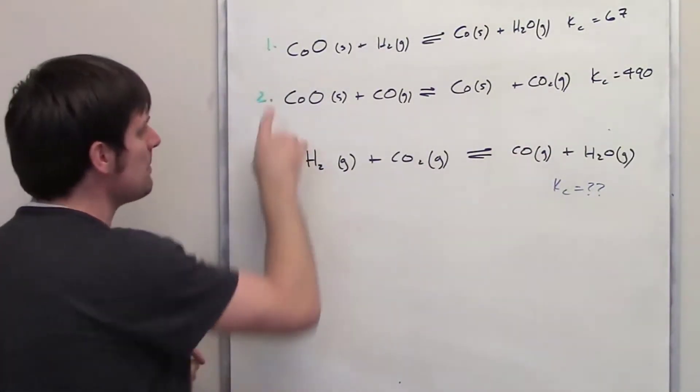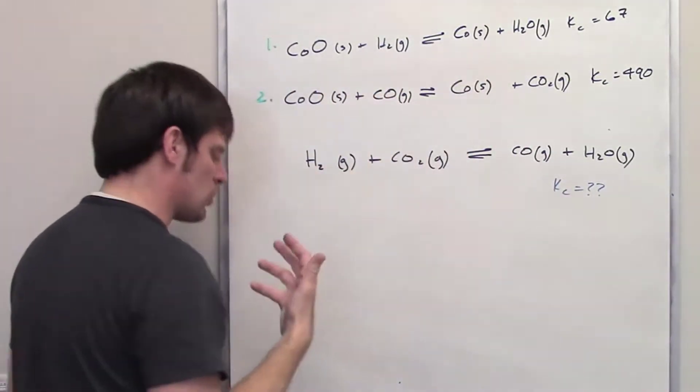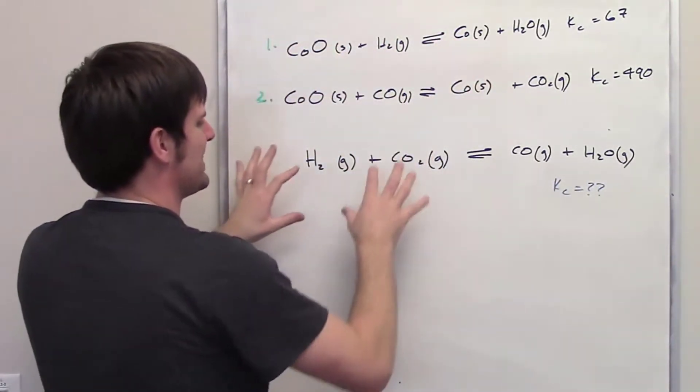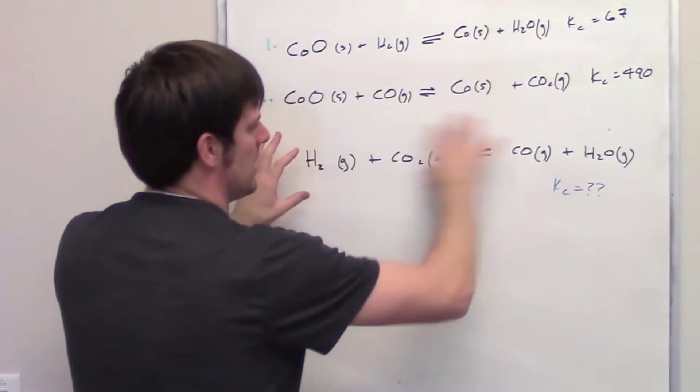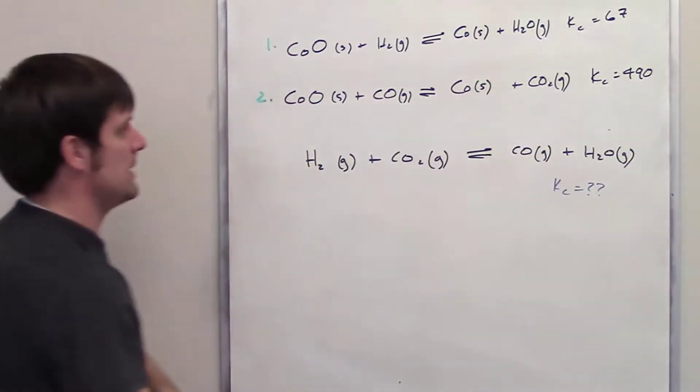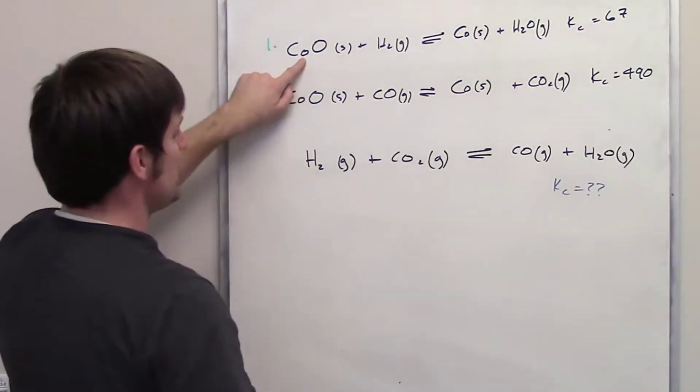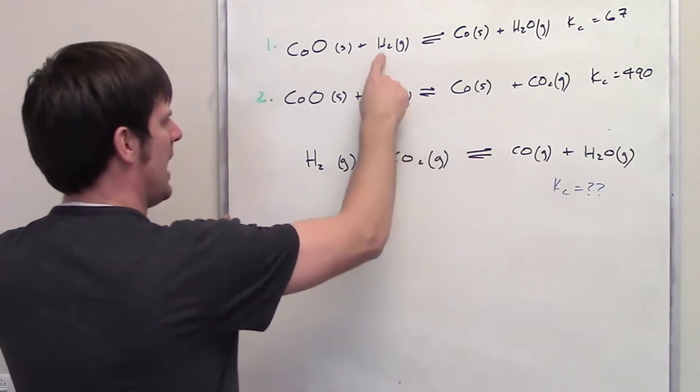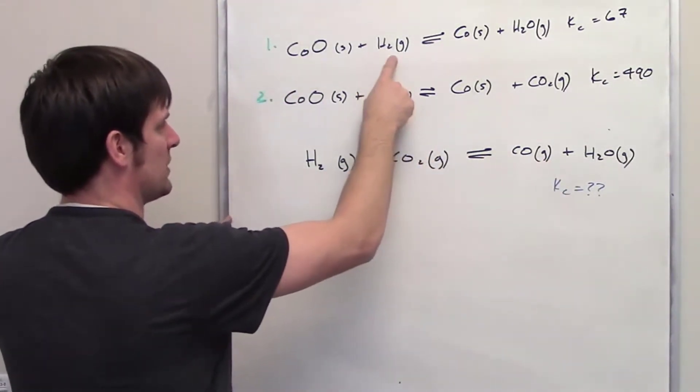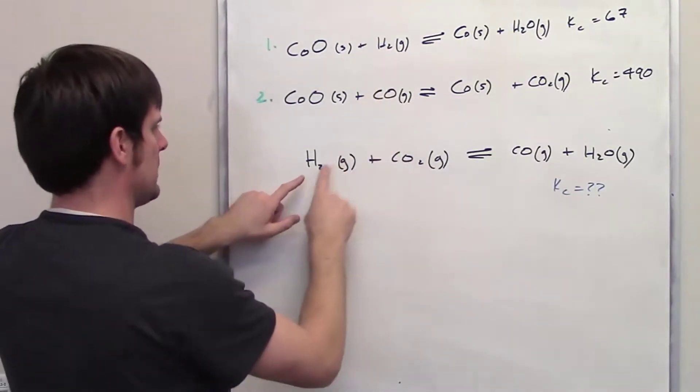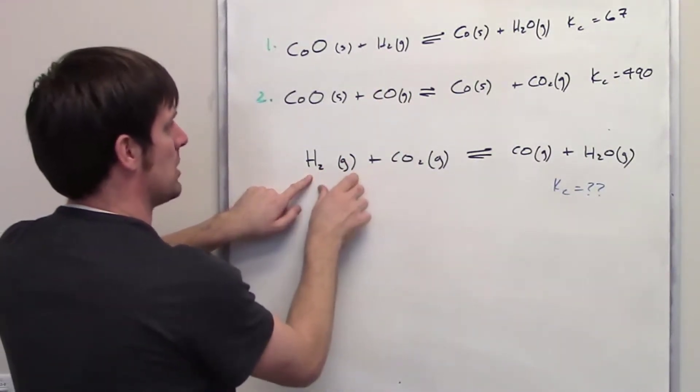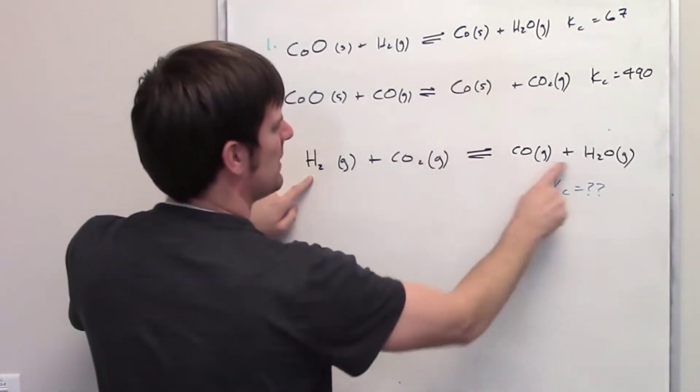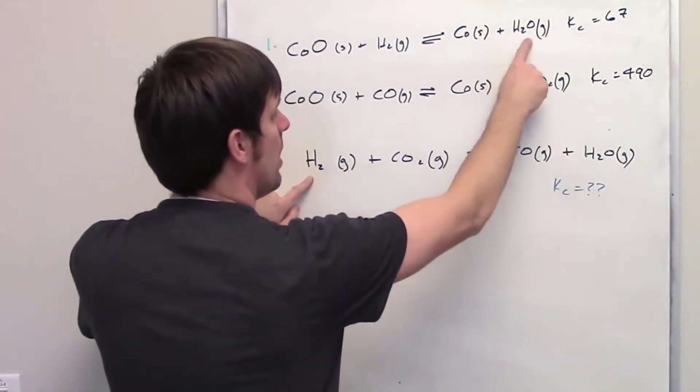So what I'm going to do is I'm going to begin by looking at equation number one. I'm going to try and see if there are parts or elements of it that are the same or similar to the overall equation we're trying to get to down here. I've got this CoO cobalt oxide. I don't see that anywhere in this equation down here. I have H2. It appears on the left side of this equation. And I see it appearing on the left side of my overall equation. Okay, that's good. I've got this cobalt solid. Well, it doesn't appear down here, but I've got water gas.